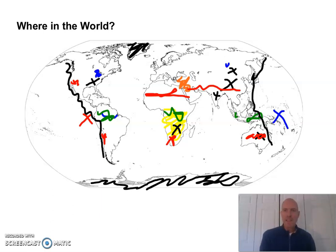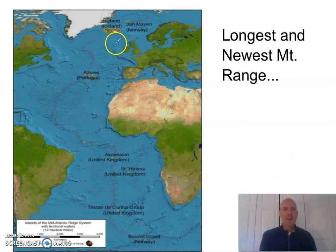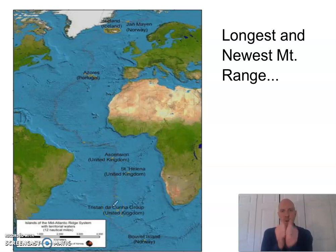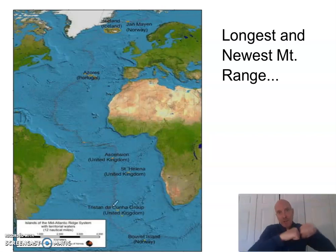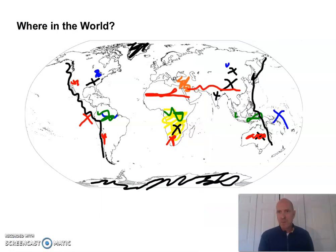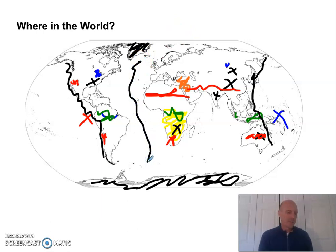Now draw the youngest mountain range. Where is the longest, most extensive mountain range in the world? It's underwater — the Mid-Atlantic Ridge. That lava is constantly erupting, and as it erupts it pushes plates apart, forming a diverging boundary. Those plates that move eventually start bumping into other things, creating converging boundaries. Go ahead and draw in the Mid-Atlantic Ridge — youngest and longest mountain range.